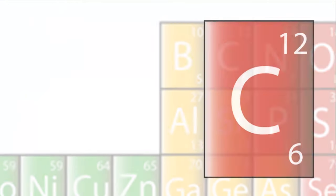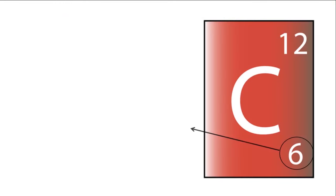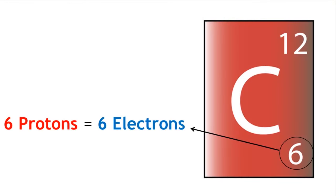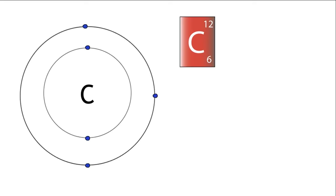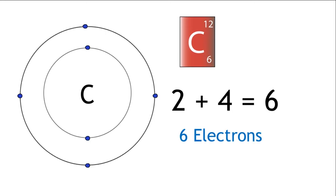Let's look at some more examples. Carbon has six protons, therefore it has six electrons. The first two electrons are placed in the first shell, and the next four are placed in the second shell. Two plus four: six electrons. This will be written as C 2,4.